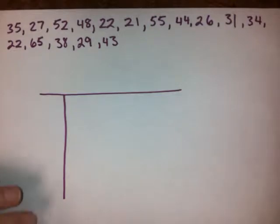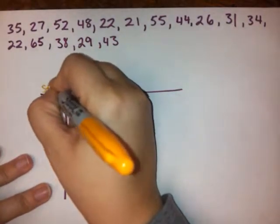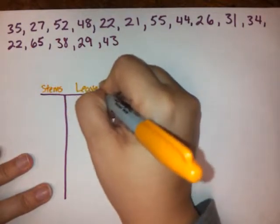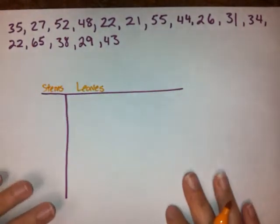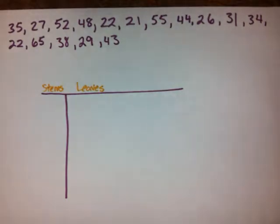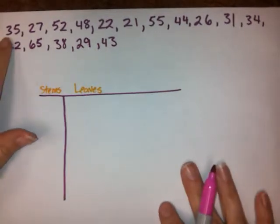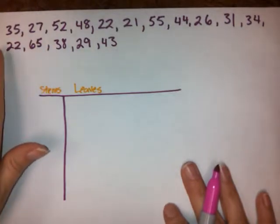Our stems go here and our leaves go here. And the way this works, the stem and leaf plot, it's a way to make this information basically more concise. My stems are going to be the tens place for these things.